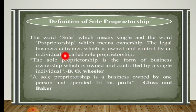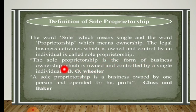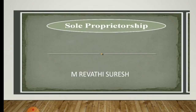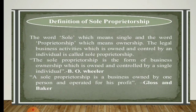The legal business activities which is owned and controlled by an individual is called as a sole proprietorship. A business which is owned by a single person is called as a sole proprietorship. The sole proprietorship is the form of business ownership which is owned and controlled by a single individual — this definition is given by B.O. Wheeler. Another definition by Gloss and Baker: a sole proprietorship is a business owned by one person and operated for his profit.